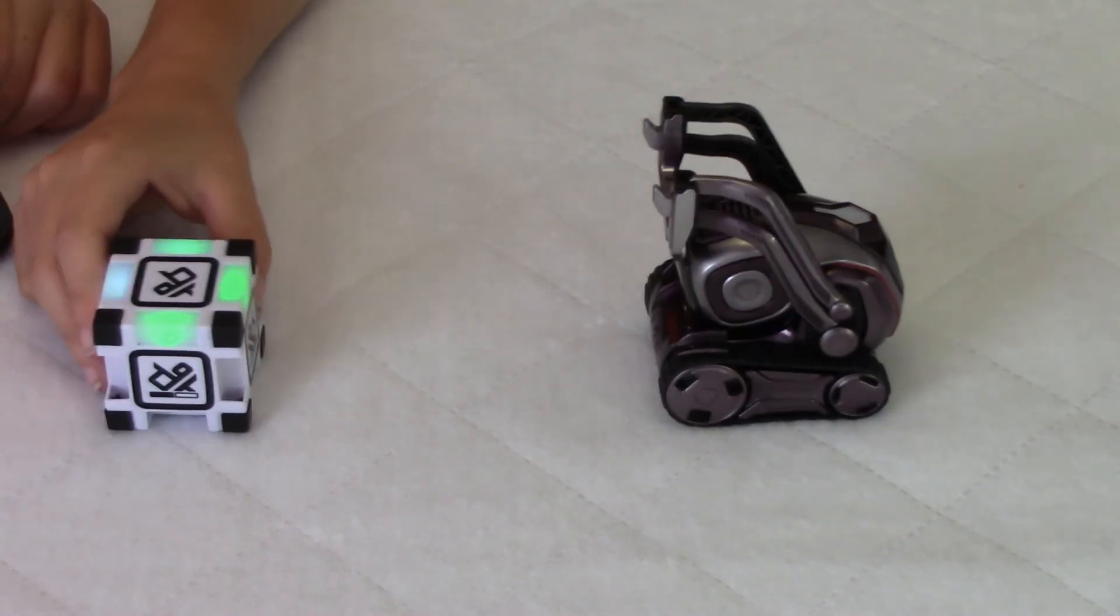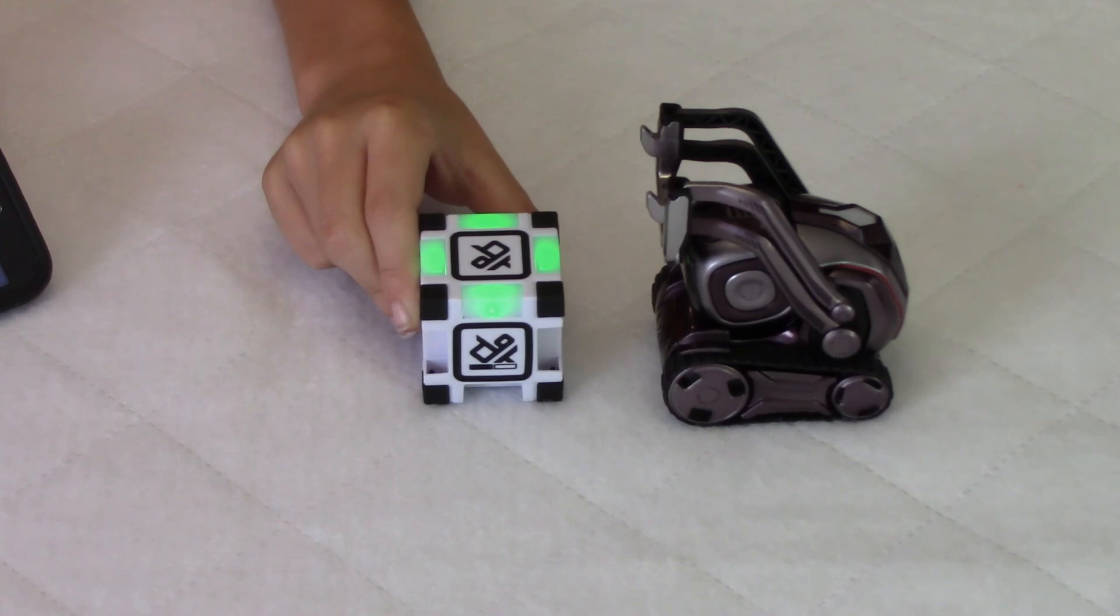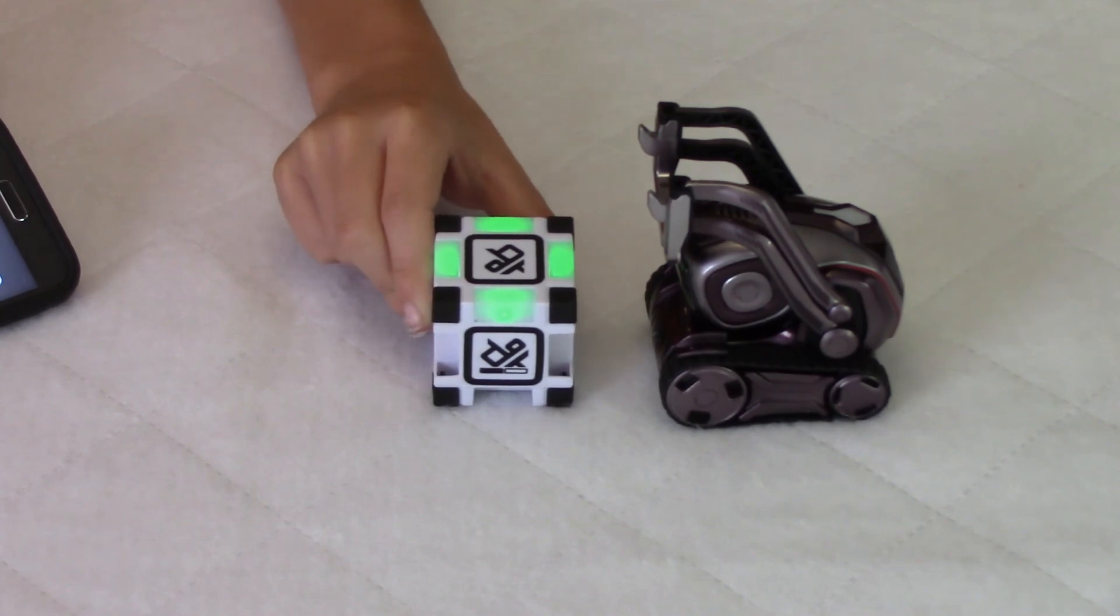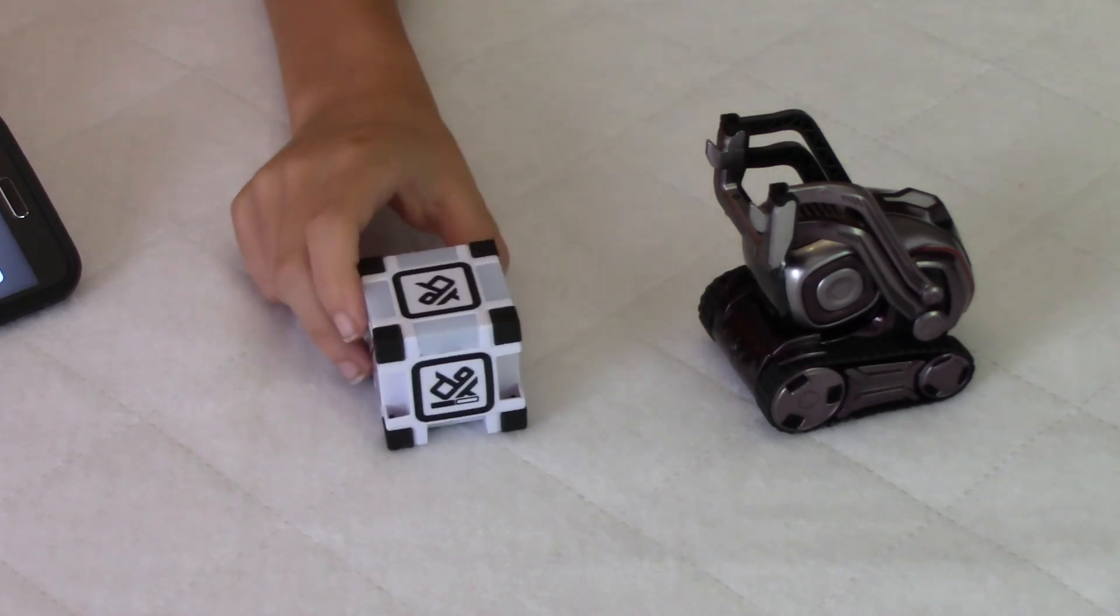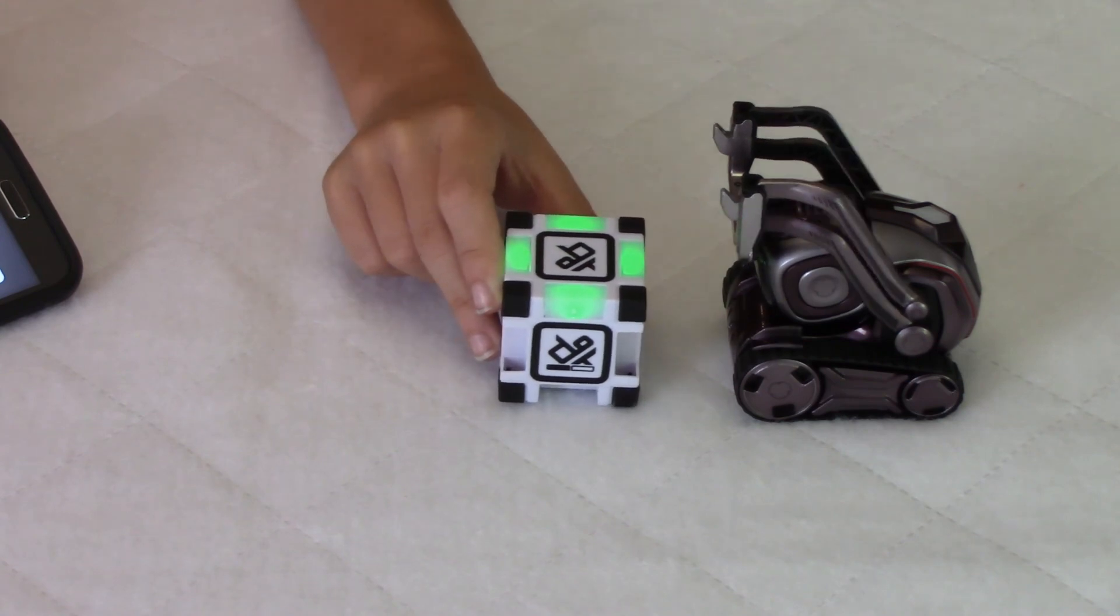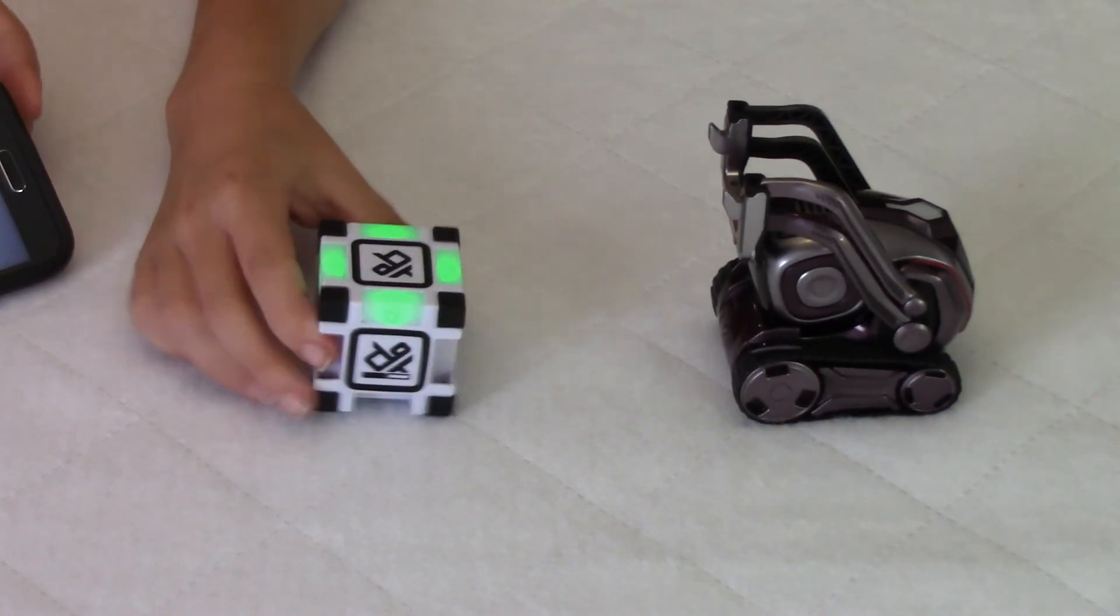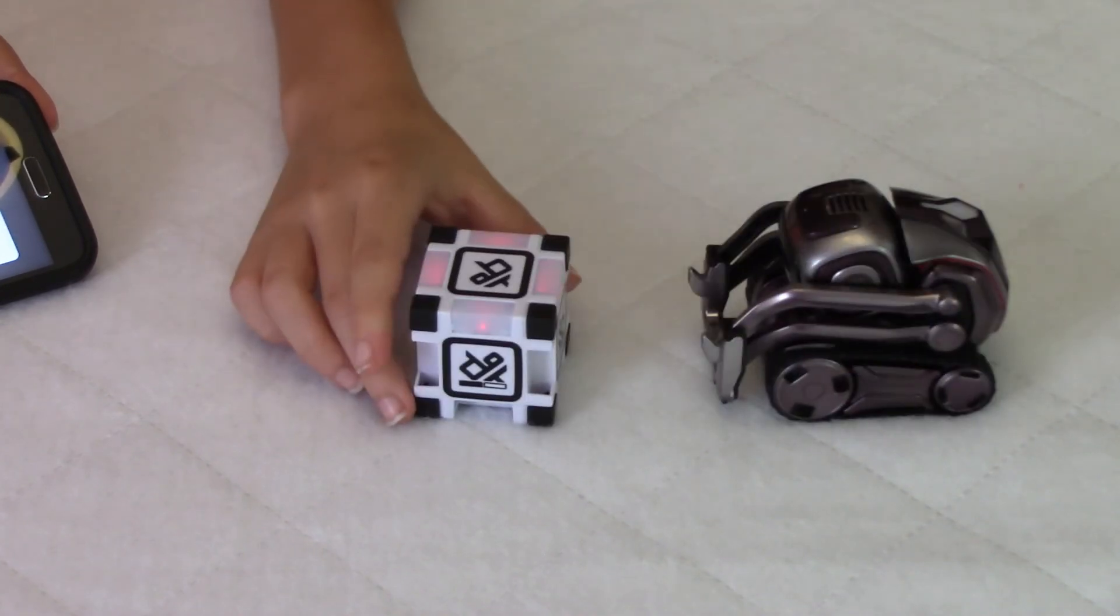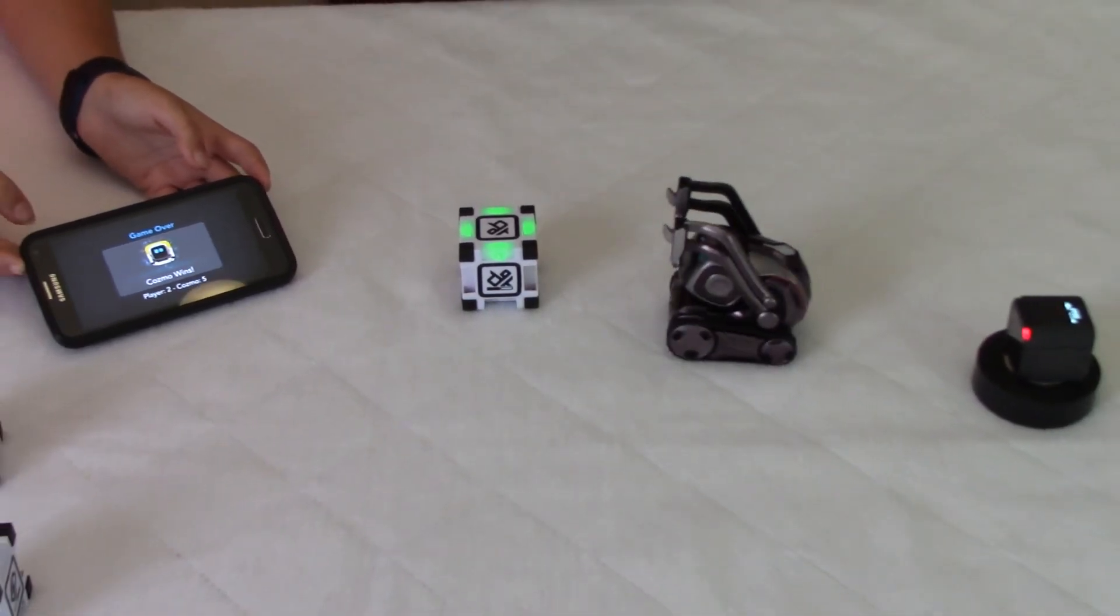Oh, we got that point. He's getting ready. Almost. Oh, he got it. It's 4-2. If he gets this point, he wins. Oh, he got it. So now, Cosmo won, so now he looks happy.